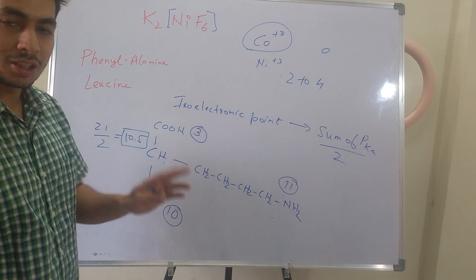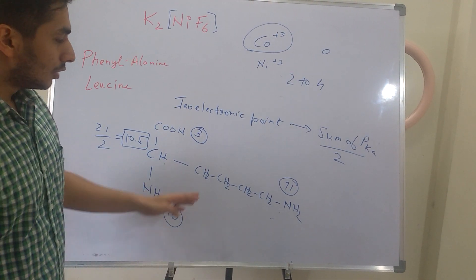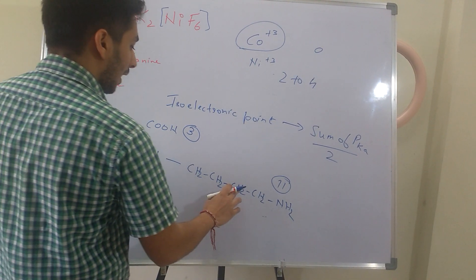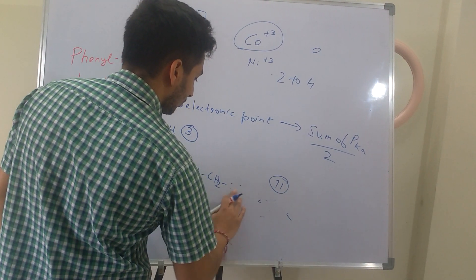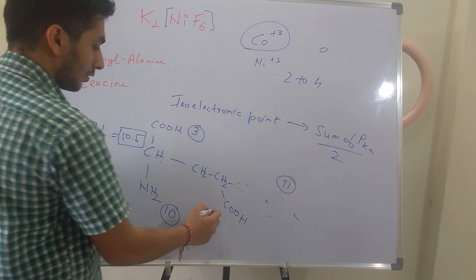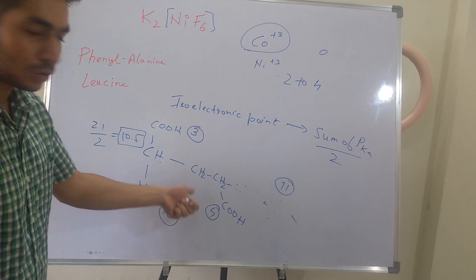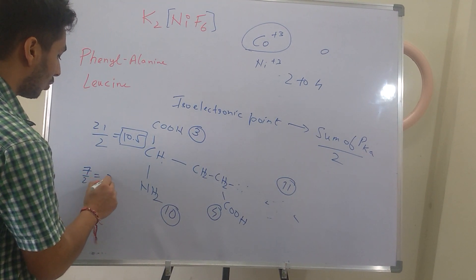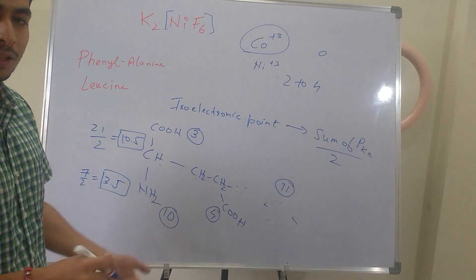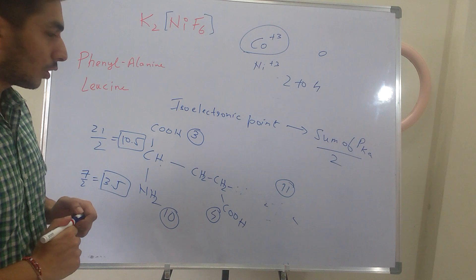Always remember: for calculating the isoelectric point, always take PKA values of only 2 groups. If there are more than 2 groups present, take the values which are closest to each other. Similarly, for glutamic acid — which has a COOH group in the side chain — if the PKA values are 10, 4, and 3, the 2 closest values are 3 and 4, giving (3+4)/2 = 3.5 as the isoelectric point. Don't make the mistake of averaging all groups; always take the 2 closest PKA values.